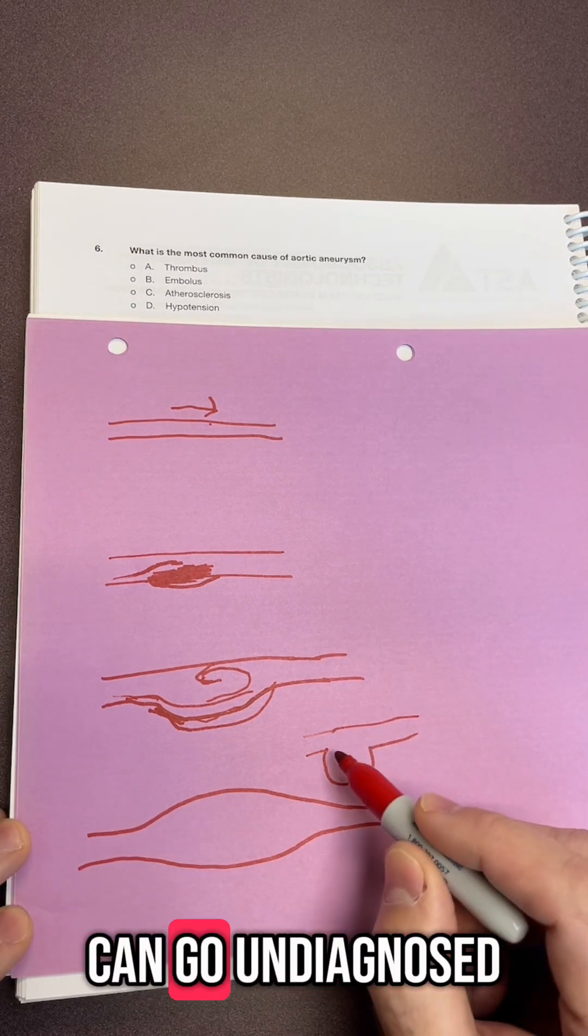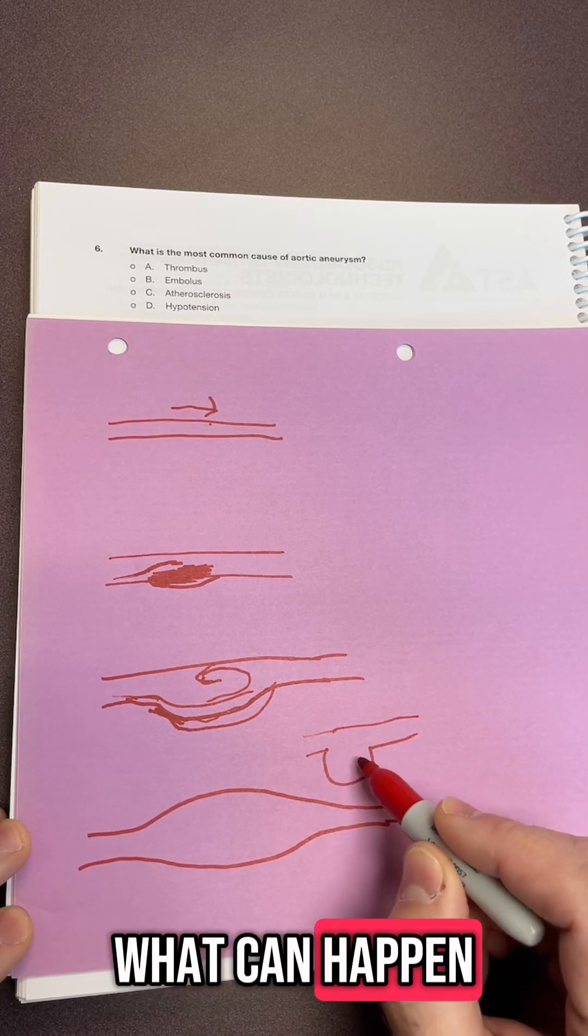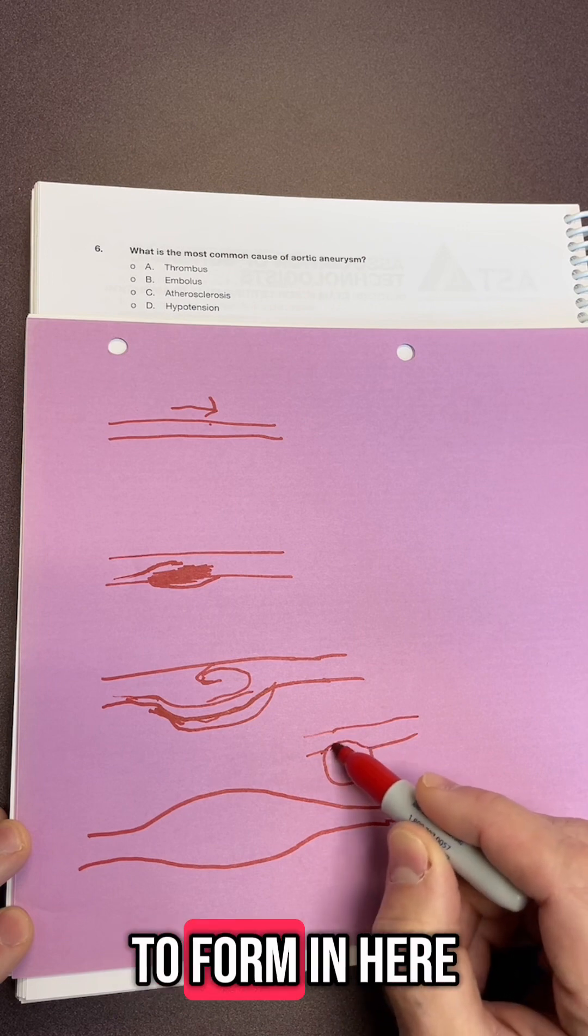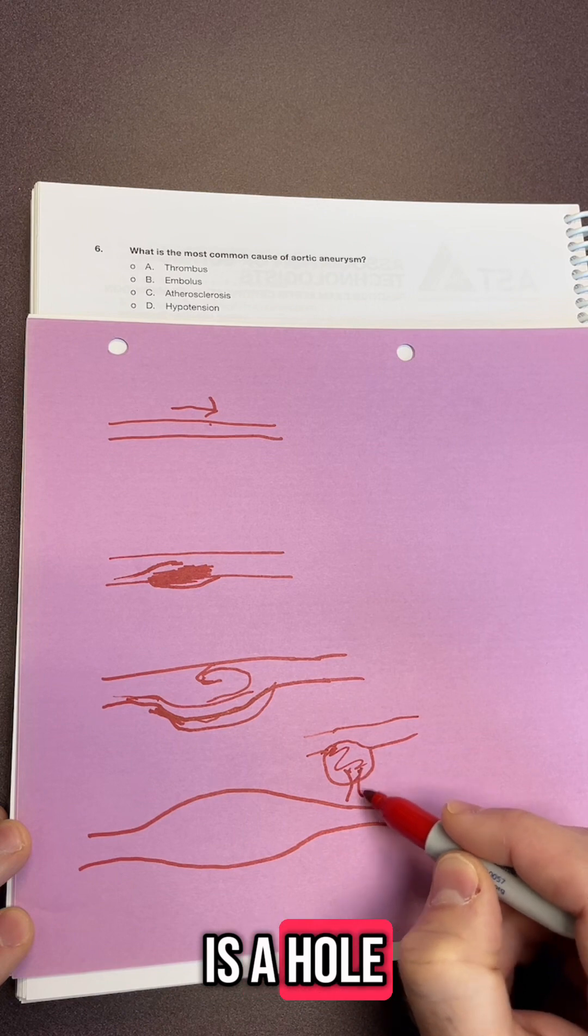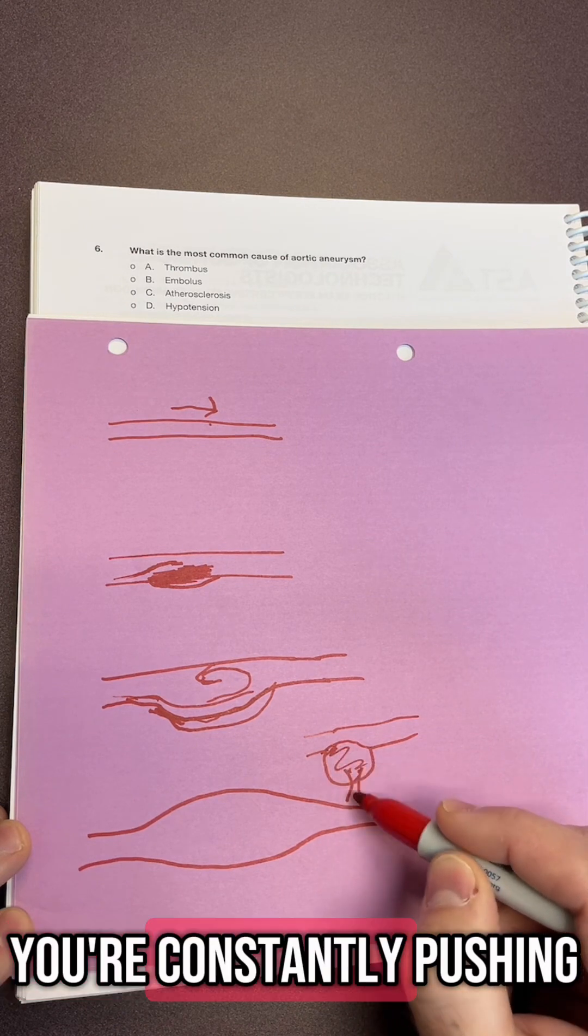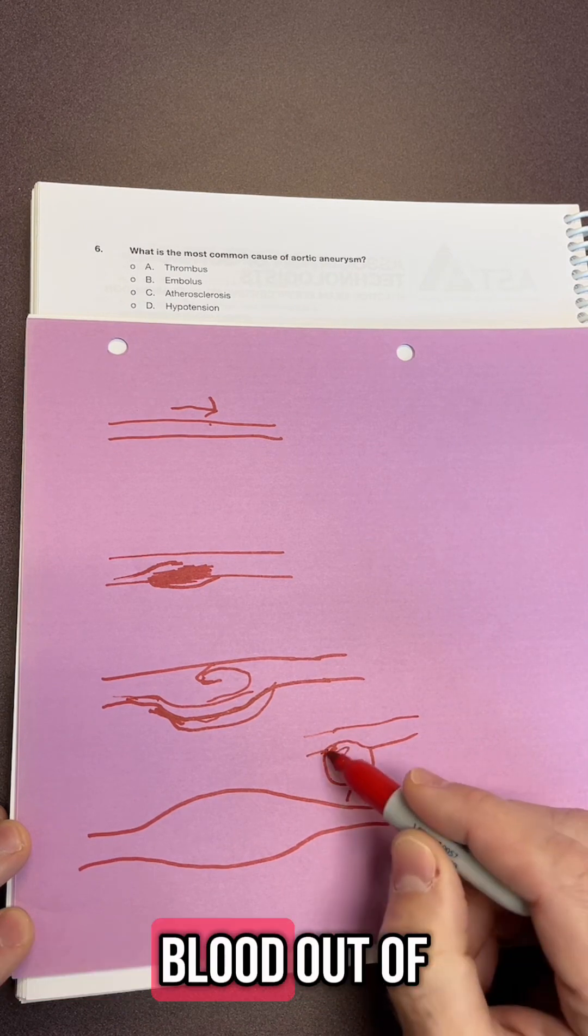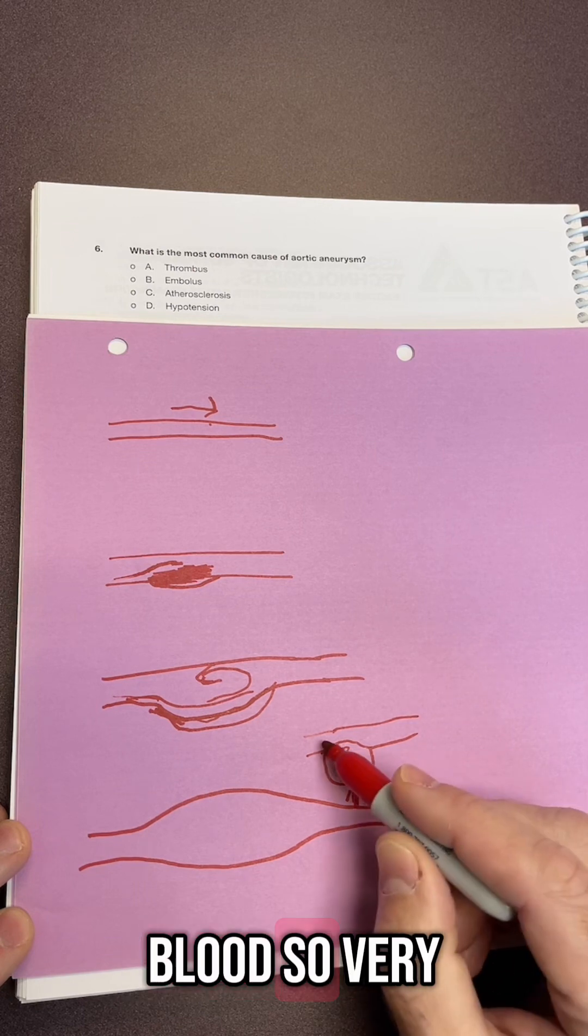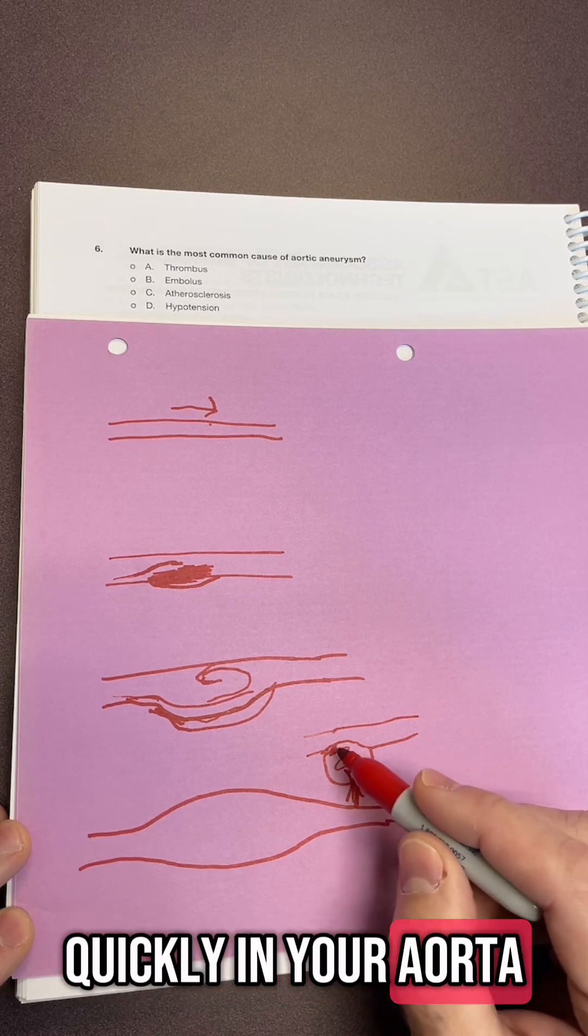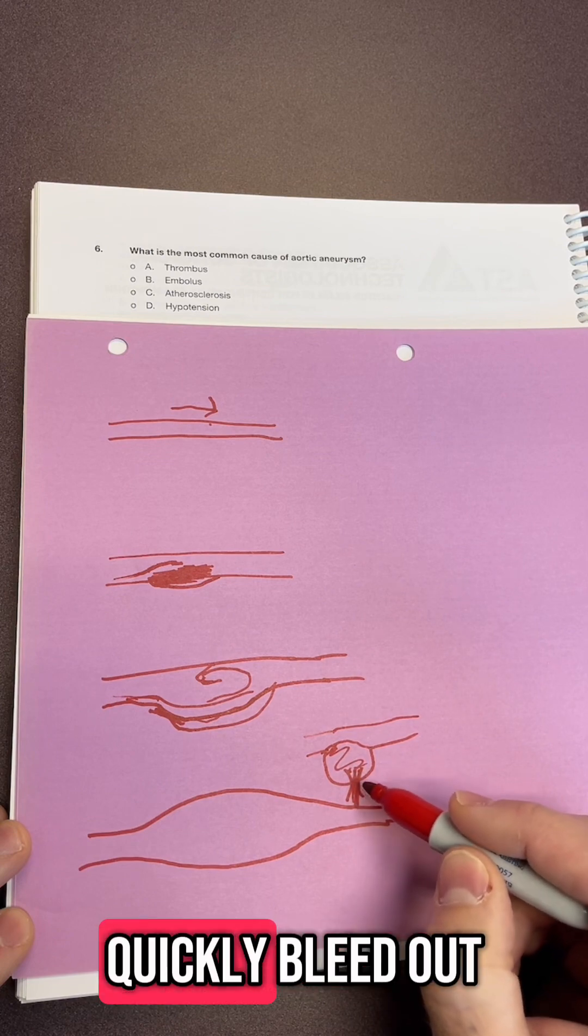And these aneurysms can go undiagnosed. What can happen is you can have blood clots to form in here, or you can have this rupture. And this rupturing is a hole. And what happens when you're constantly pushing blood out of this artery is you're losing blood. So very quickly in your aorta, if it ruptured, you can very quickly bleed out.